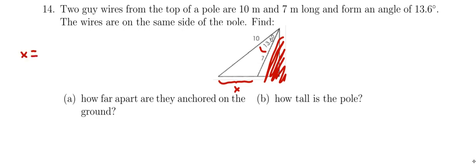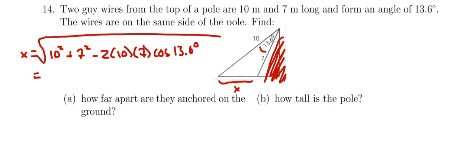So my x here is going to end up being 10 squared plus 7 squared minus 2 times 10 times 7 times the cosine of the angle in between them. Then we take the square root of the whole thing.